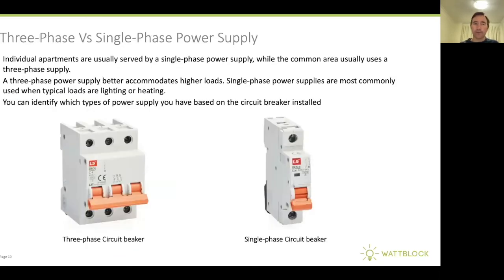The next thing to look at is three phase versus single phase power supply. Individual apartments are usually served by a single phase power supply, while common areas usually have a three phase power supply. Some much older apartment buildings from the 60s might only have a single phase power supply for the common areas. A three phase power supply is better for accommodating higher loads, while single phase is used for things like lighting or heating. You can identify what type of power supply you have based on the circuit breaker installed — on the left is a three phase circuit breaker, and on the right is a single phase circuit breaker.